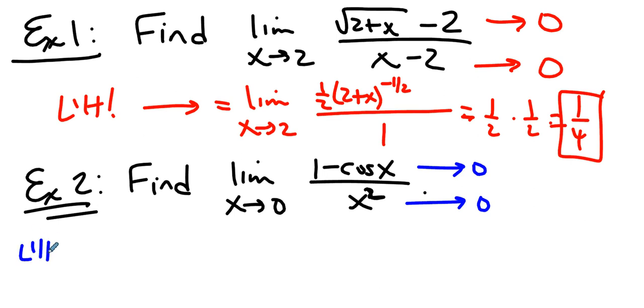So, by L'Hopital, this is the limit as x approaches 0 of, take the derivative of the numerator, take the derivative of the denominator. If this limit exists, this limit will be the same.